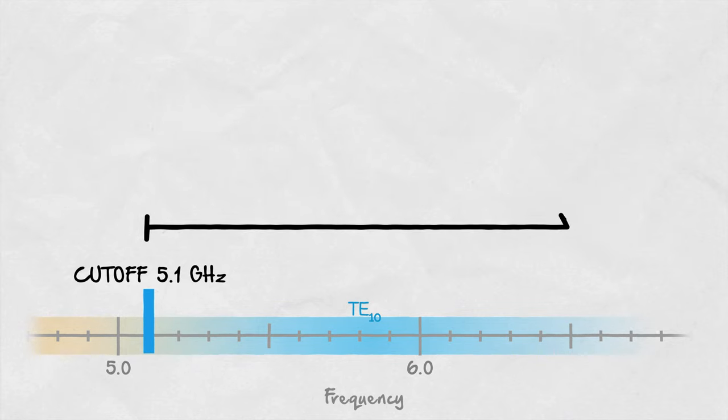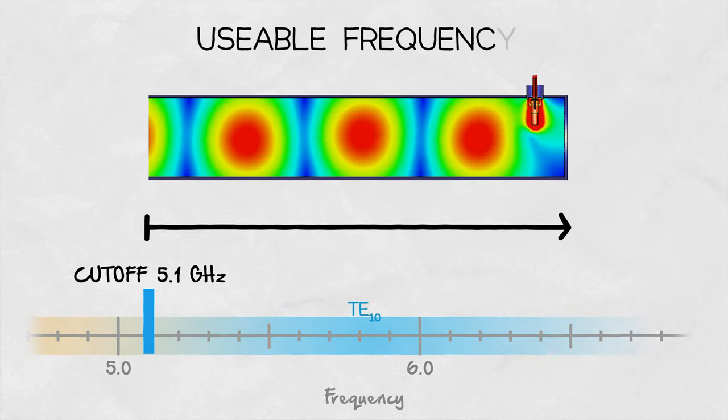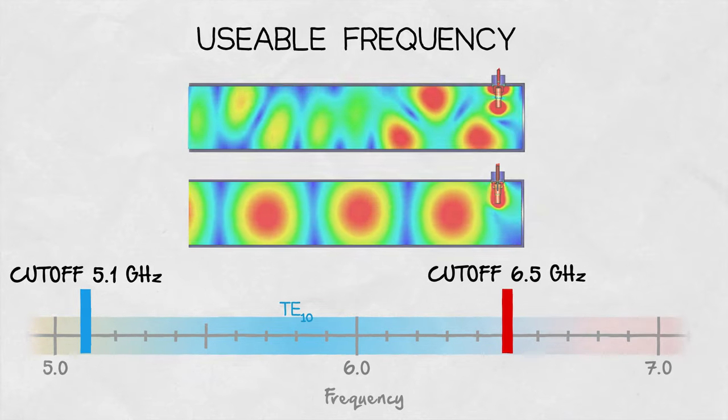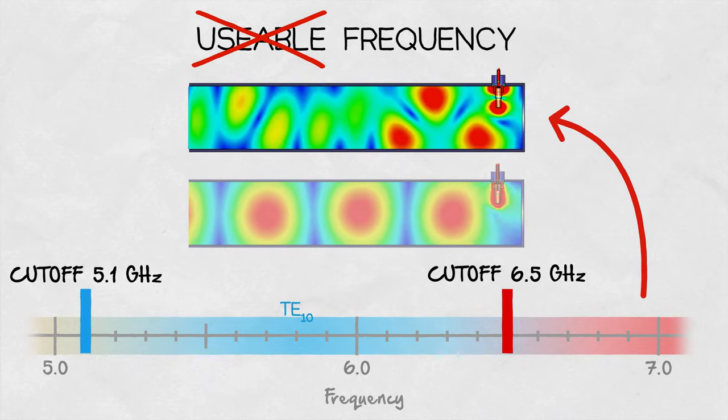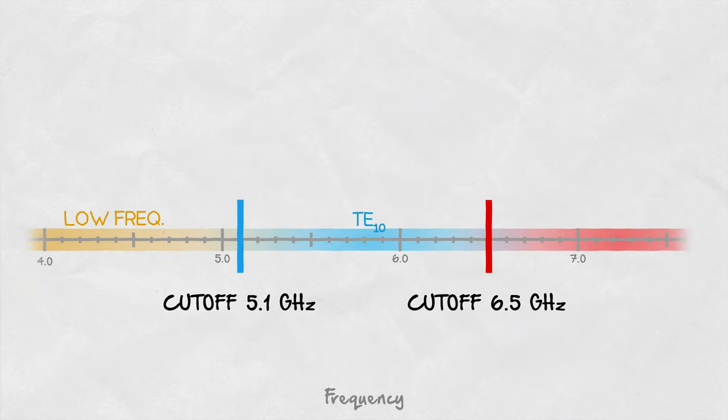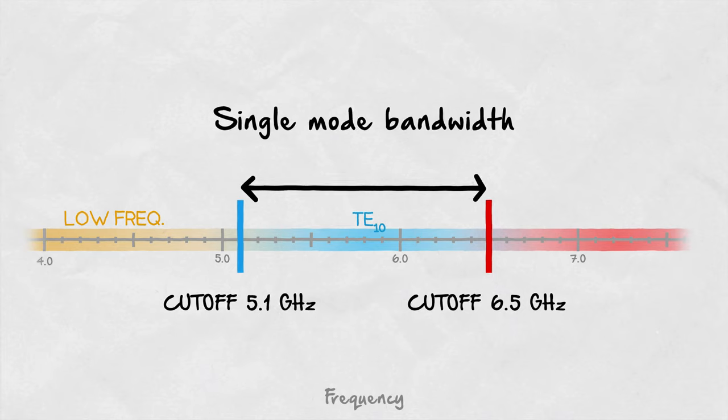The upper frequency at which a waveguide is practically usable is given by the cutoff frequency when the next higher order modes start to propagate. At this frequency, the field inside the waveguide starts to behave in a complex way and energy transfer is no longer optimal. This is why waveguides are mainly used in the band between these two frequencies called single mode bandwidth.